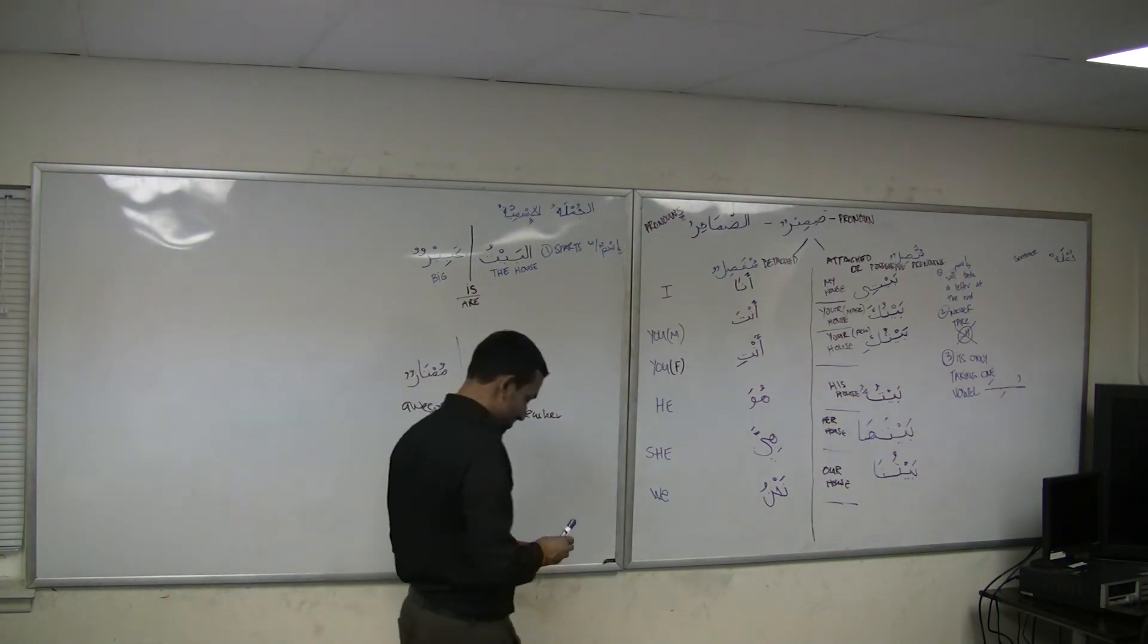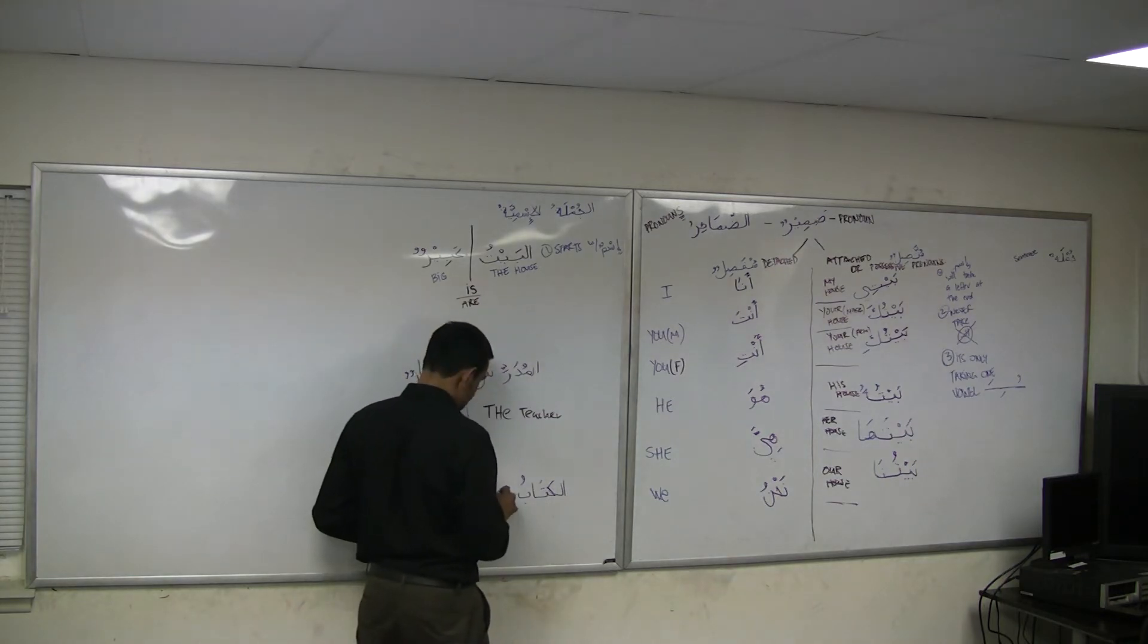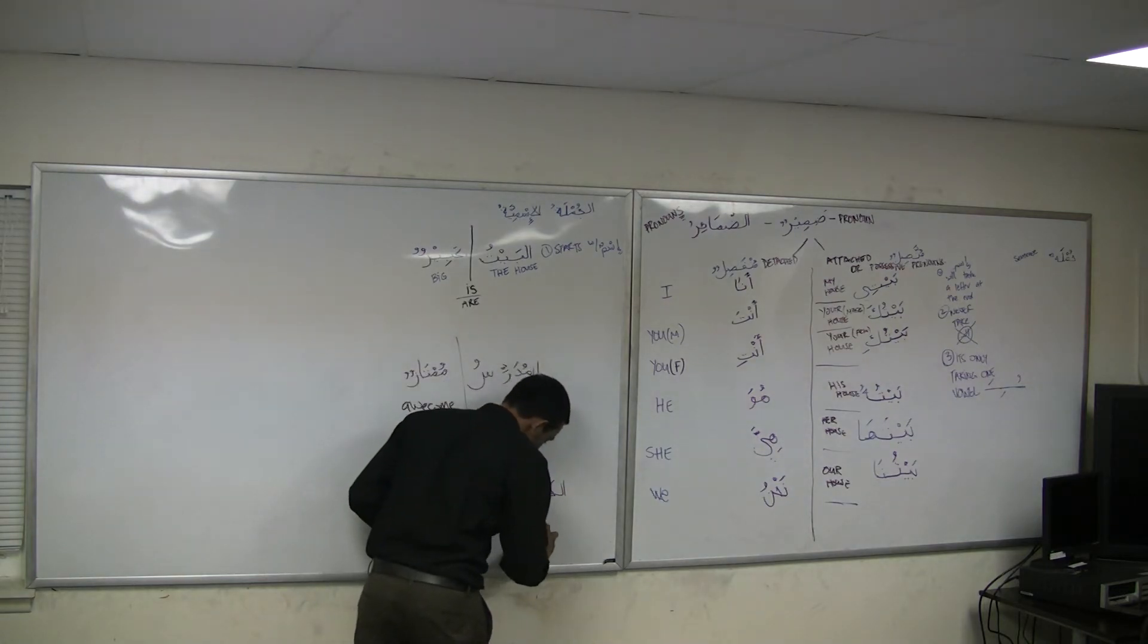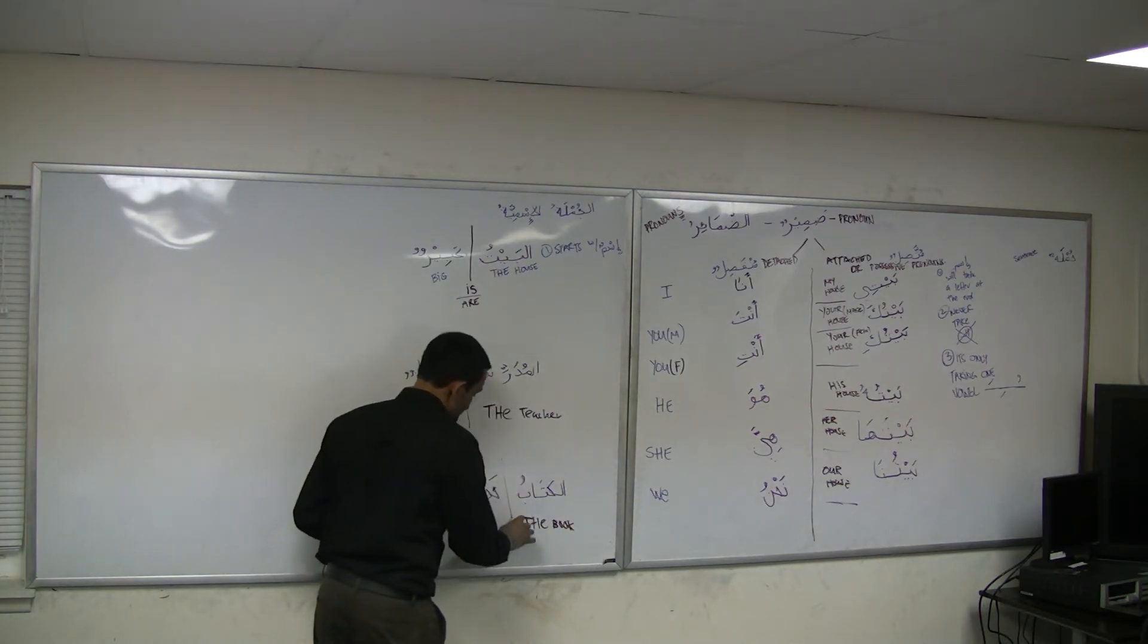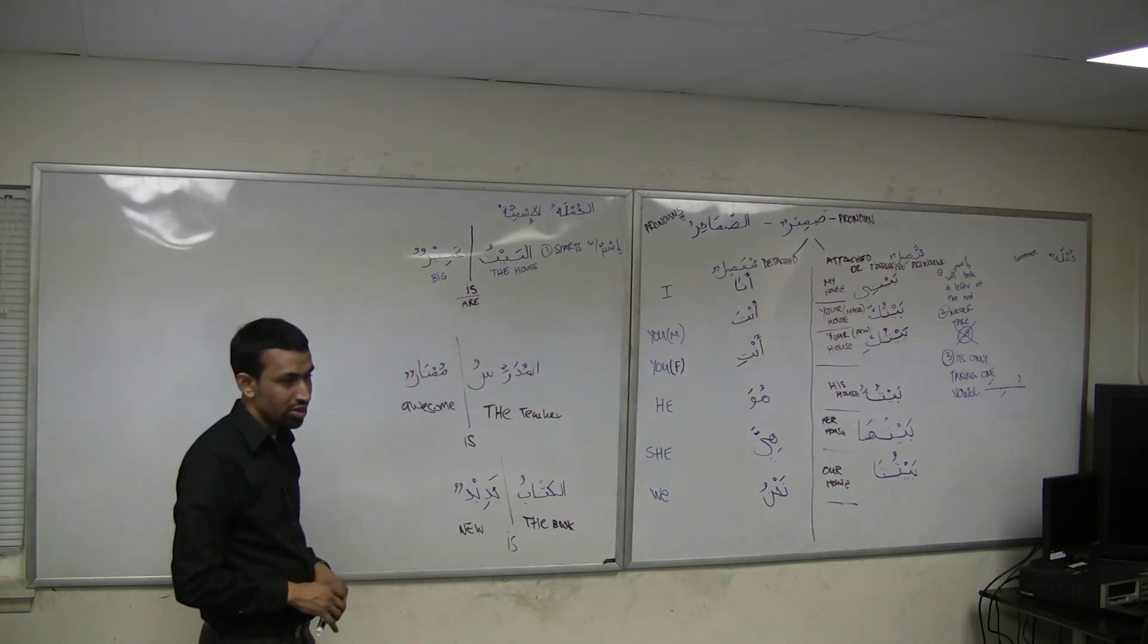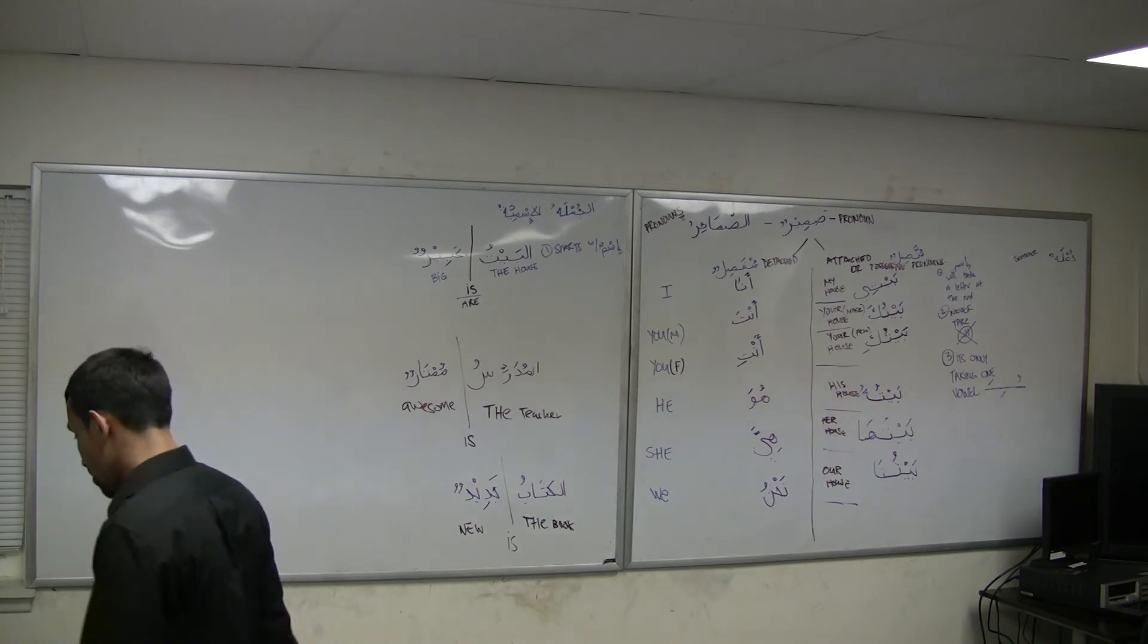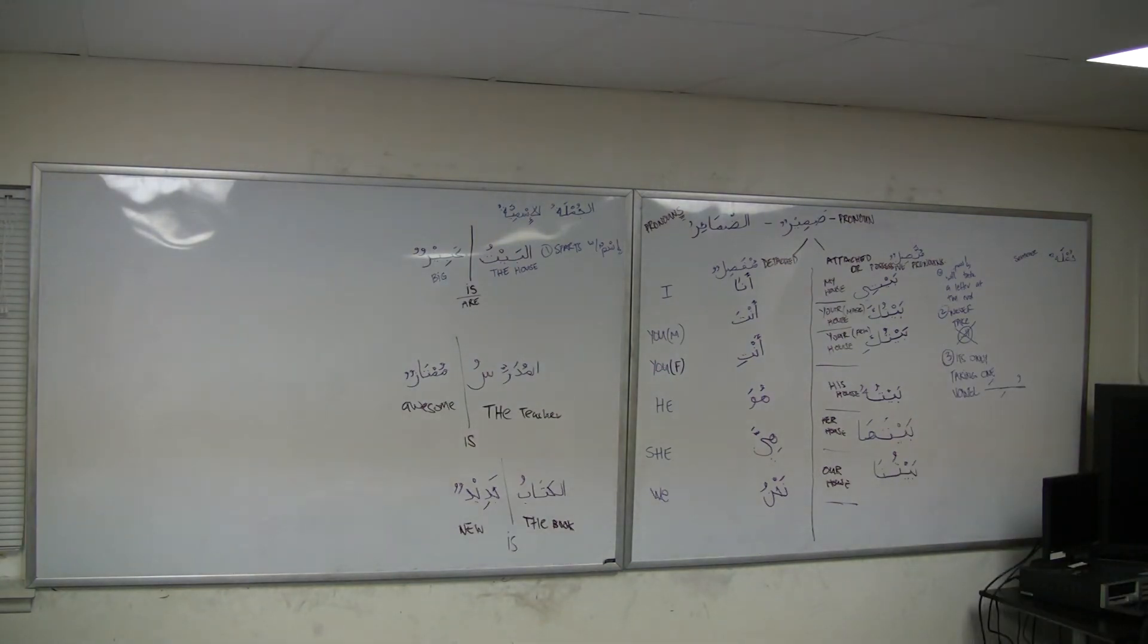Brother Safi, you're up. Go ahead. Al-kitabu jadidun. What does the sentence mean? The book is new. Where is 'is'? Implied.